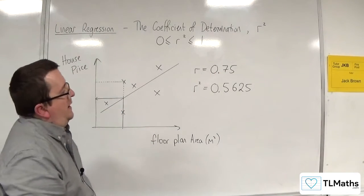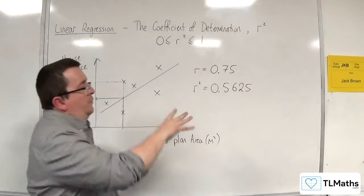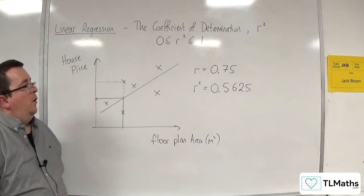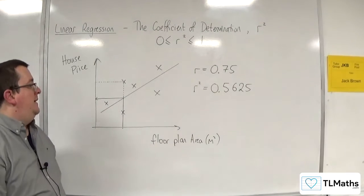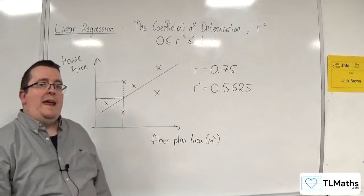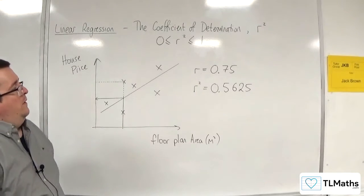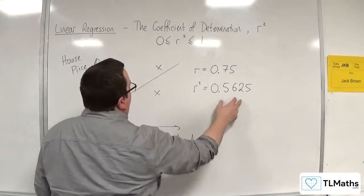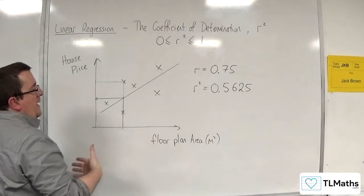Well, that is saying that 56%, or 56.25% of the variation in Y is explained by the variation in X. So 56.25% is explained by the floor plan area.